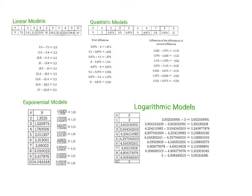In these problems, you're going to be asked to identify different types of models from a table. Four of the ones you could be asked to identify are linear, quadratic, exponential, and logarithmic. What you're going to do is look at the y's. If it's linear, you subtract the y's — second term minus the first, third y term minus the second y term — and if it's linear, every single one of those differences is going to be the same.